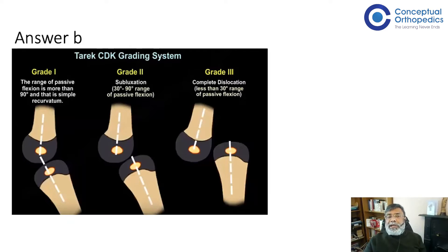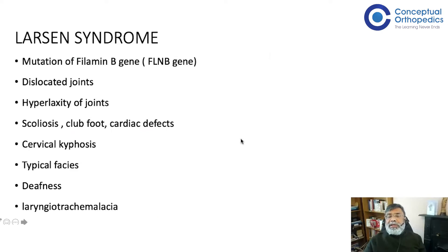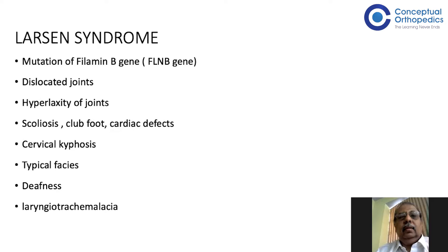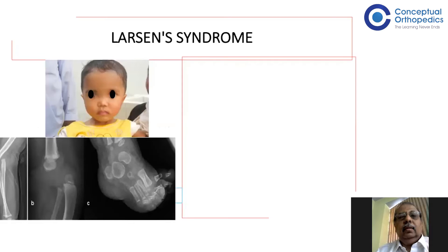The common associations are arthrogryposis, spina bifida, and Larsen syndrome, which involves multiple dislocated joints. Professor Gopa Kumar adds detail: Larsen syndrome is a rare syndrome due to mutation of the filamin B gene (FLNB). Its presentations include dislocated joints, joint hyperlaxity, scoliosis, clubfoot, cardiac defects, cervical kyphosis, typical facies, deafness, and laryngomalacia. Before taking these children for any anesthesia, an X-ray of the cervical spine is mandatory.